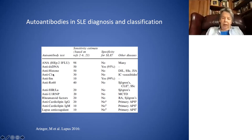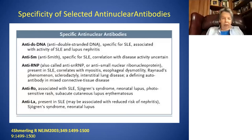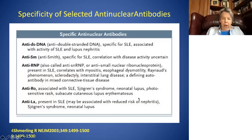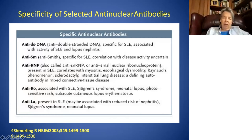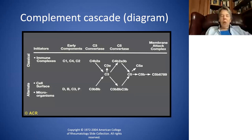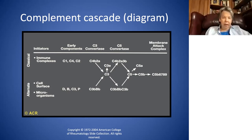Lupus is a disease in which complement is consumed. We follow the third component C3, the fourth component C4, and also C1Q. Those are often consumed in patients with active lupus, particularly with renal disease. Anti-Ro is associated with subacute cutaneous lupus. Anti-Ro and La — also called SSA and SSB — are associated with Sjögren's syndrome, and anti-RNP is associated with mixed connective tissue disease. The two antibodies specific for lupus are anti-Smith and anti-double-stranded DNA.